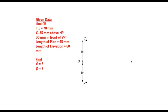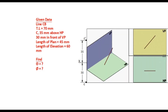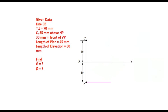Initially, assume that the line is parallel to VP and inclined to HP. In this condition, the elevation of the line will have true length with its true inclination to HP, and the plan will be a line parallel to the XY line with its length of plan. In our problem, length of plan is given as 45mm. So draw a horizontal line from C for a distance of 45mm. Let the end point of this line be D1.